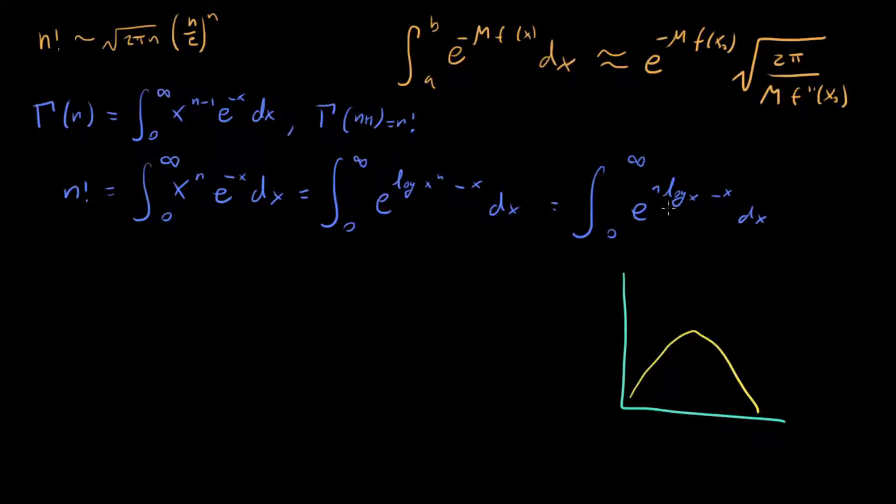So this integral is of the right form. All we need to do now is just figure out first of all, where the location of the maximum is. So we get our x naught and then we have to evaluate the second derivative. So let's do that.